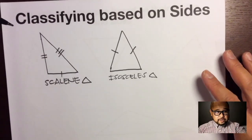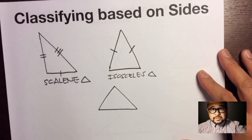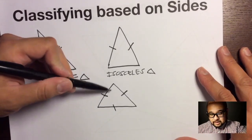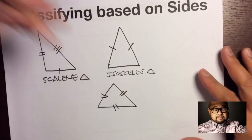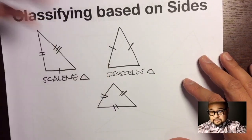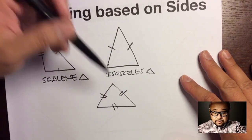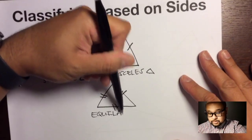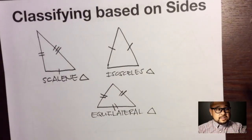The third type based on sides is where all three sides are congruent. We show this with matching tick marks on all three sides. So if one side is five, then all sides are five. This type of triangle, where all three sides are congruent, is called an equilateral triangle.